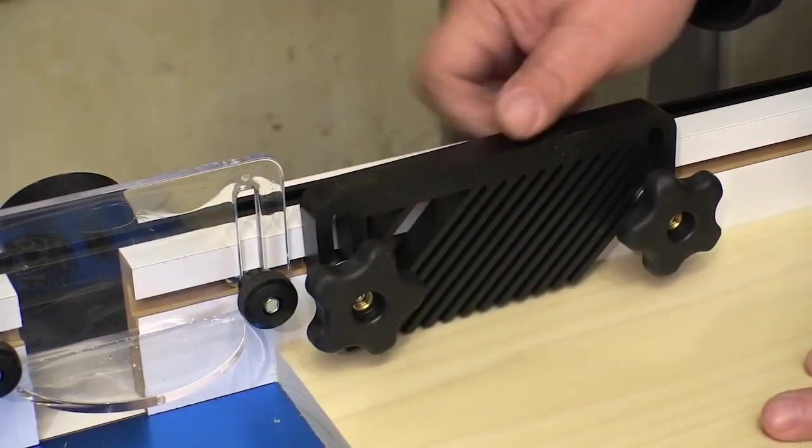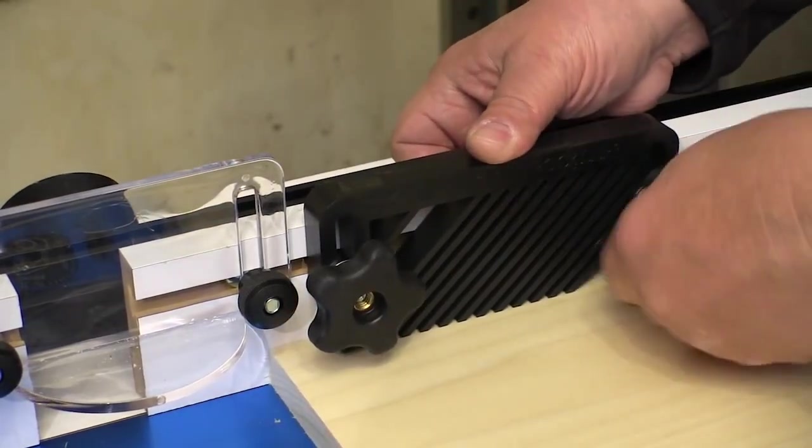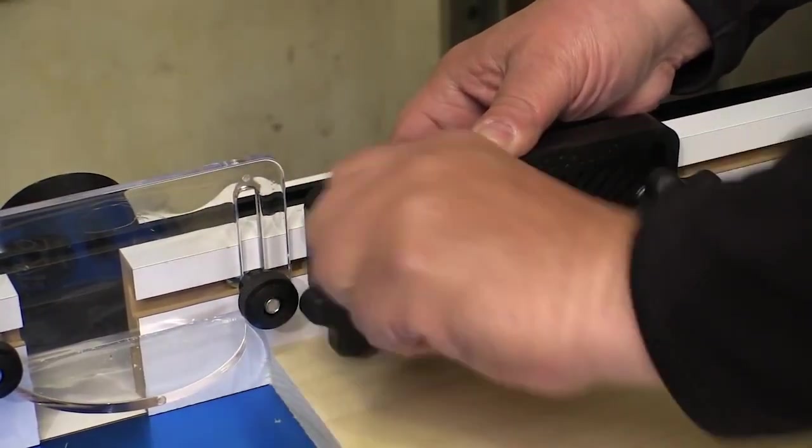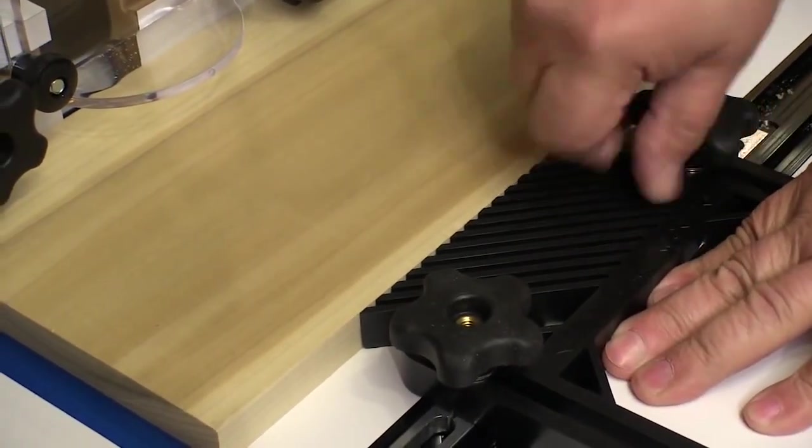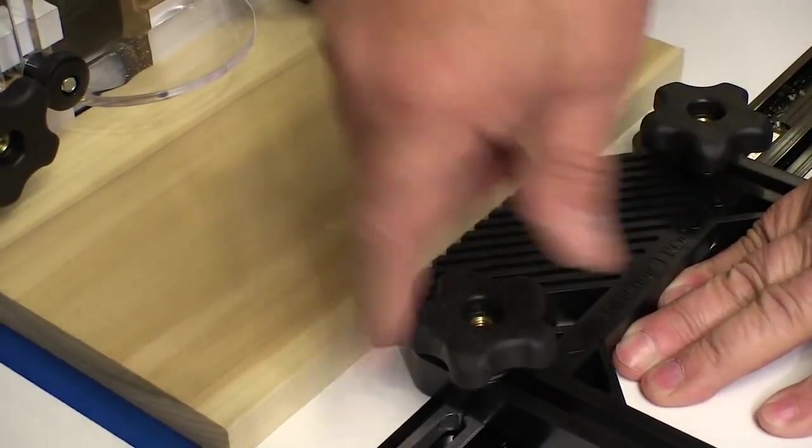The feather boards install easily and help keep the wood flat on the table while you're routing. The third feather board goes in the miter track and helps keep the wood firmly against the fence while you're routing it.